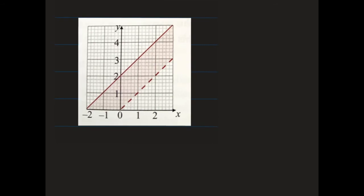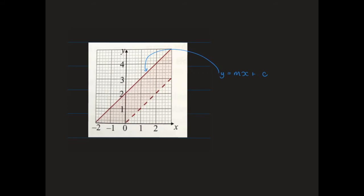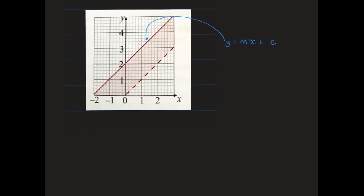For example two, the first thing is to find the equation of each line. The first line is of the form y equals mx plus c. Using rise over run, the rise is 1 and the run is 1, giving a gradient of 1. The y-intercept crosses the y-axis at 2, so the equation is y equals x plus 2. It's a solid line, so not a strict inequality.